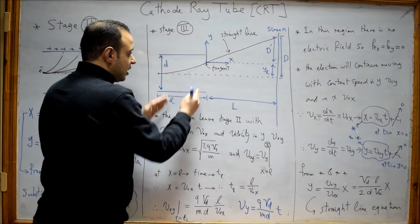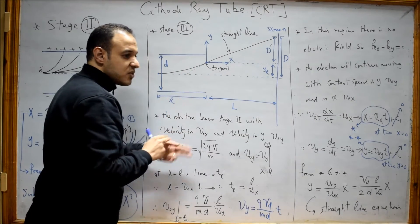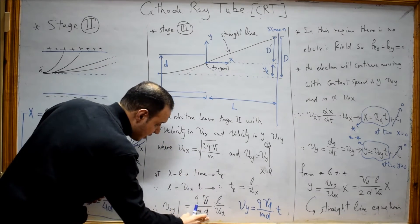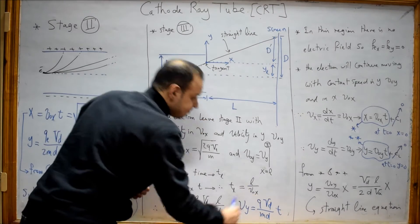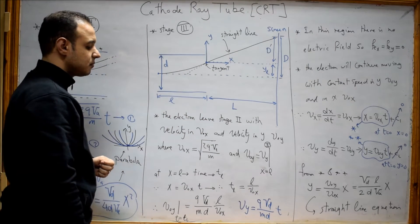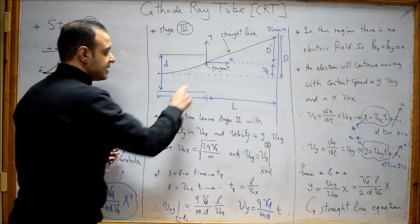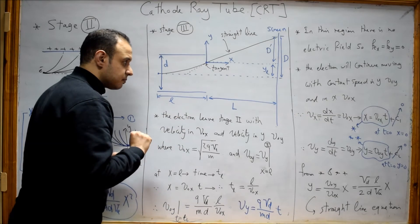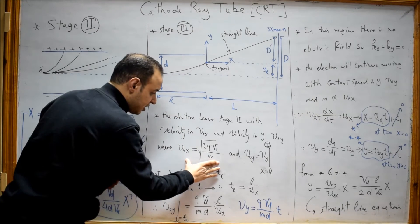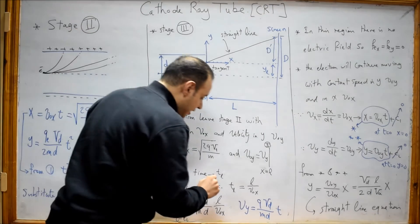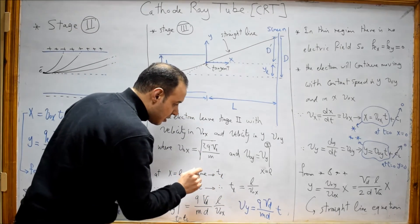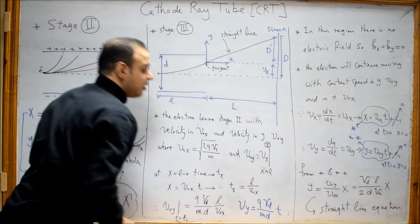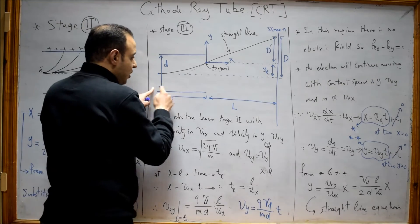No acceleration means that the velocity of the electron will remain constant. In this region, the electron has two velocity components: one in the x direction, which was constant, and another in the y direction. At the exit point of the deflection plates, the electron also has these two velocity components — one in x and one in y — but we must substitute the time here with the time taken from the entry to the exit point.